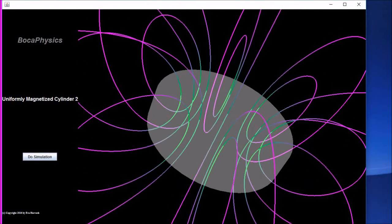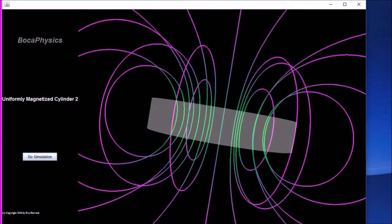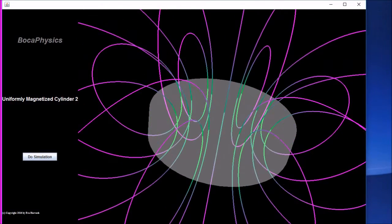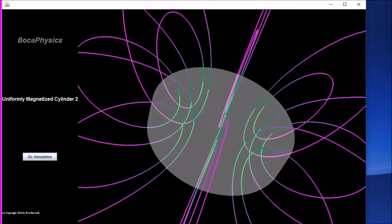Next, consider the case of a cylinder, the length of which is smaller than its radius. The field lines appear very similar to those of a current carrying loop. In the limit of a disk of uniform magnetization, we regain the solution for a current carrying loop.